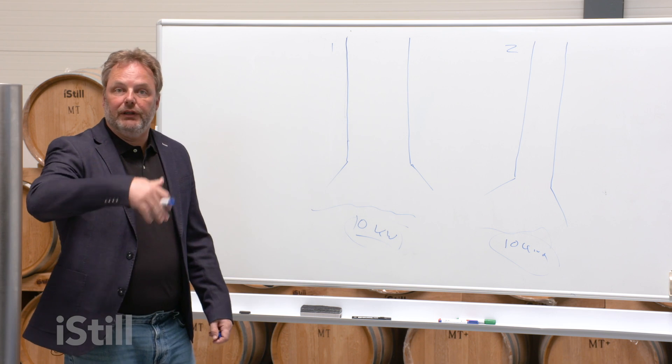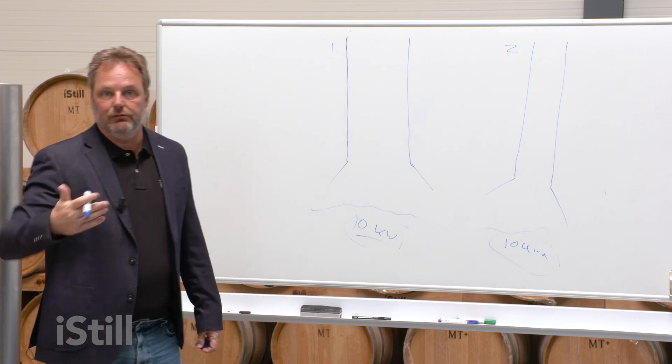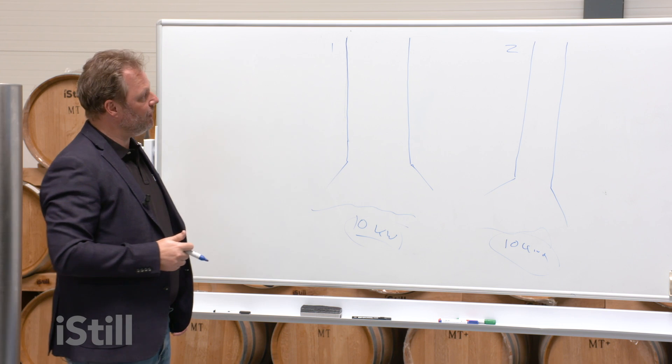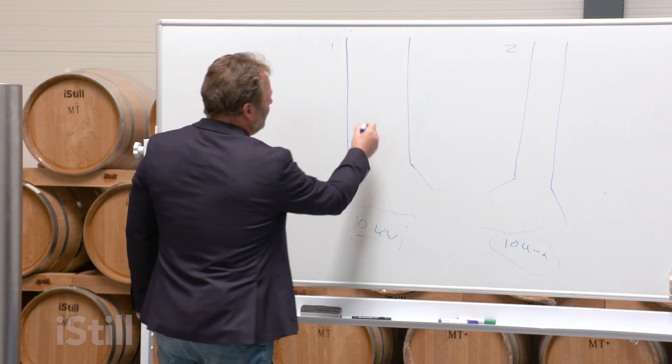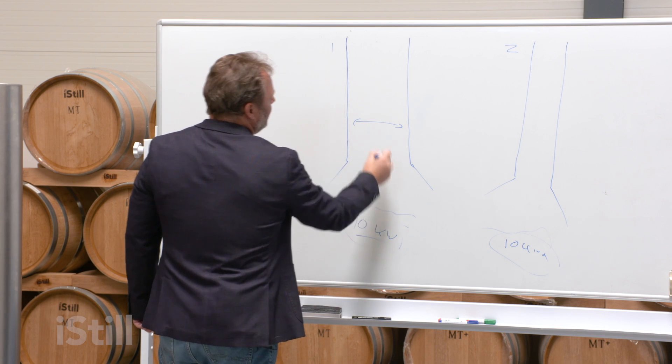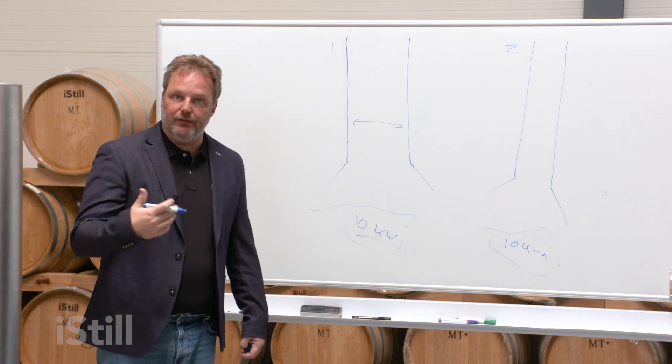We are creating the same amount of vapors. What happens to vapor speeds in number two comparative to number one? The answer is very easy: all those vapors have to go through the same column before they hit the bridge, before they hit the cooler, before they turn into a brandy, a whiskey, or a rum or a gin. So basically, since this one is twice as wide, the vapor speeds in column number one are much lower relative to number two.